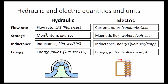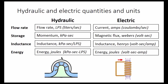So in summary, comparing the hydraulic and electric models: the flow rate is like the current, the momentum of the flywheel is like the magnetic flux of the electric inductor, inductance has momentum-per-flow-rate units in the hydraulic system and Henrys in the electric system, and the energy is in joules — with corresponding unit forms in both the hydraulic and electric systems.